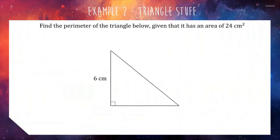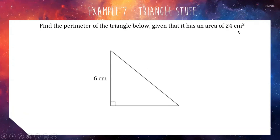For our second question, we have a triangular question: find the perimeter of the triangle below, given that its area is 24 centimetres squared. I love this question — partly because triangles are my favourite shape. We have to find the perimeter, but we've only been given one side. So the question is really: find the two missing sides of this right-angle triangle. The information given is that it's a right-angle triangle, and that this triangle has an area of 24 square centimetres. To do this question, you need to know the area formula for a triangle: area equals base times height divided by 2.